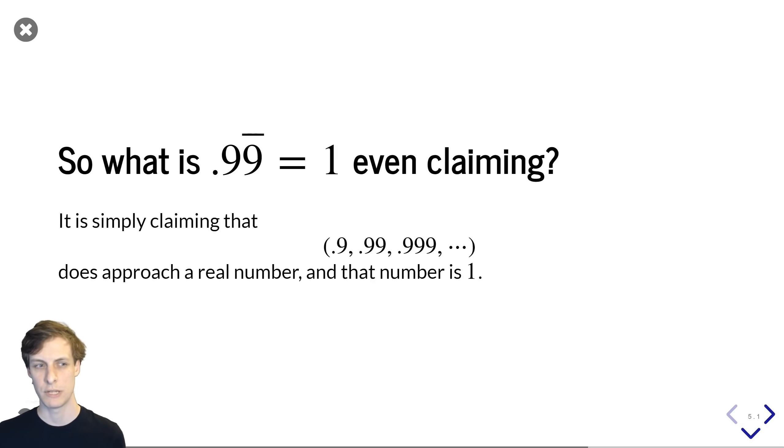So let's get back to the original question. What is 0.99 repeating equals 1 even claiming? All it's saying is that this sequence, 0.9, 0.99, 0.999, and so on, is approaching a real number, and that number is 1.